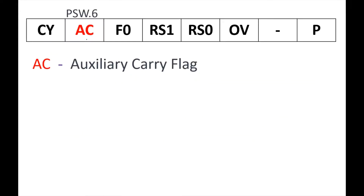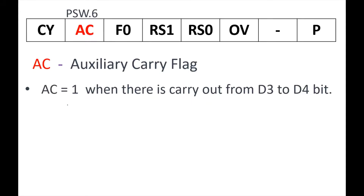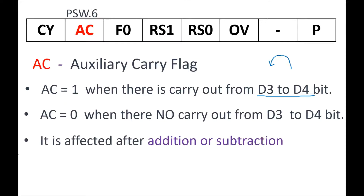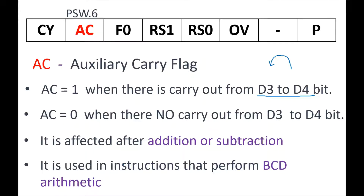The next flag is auxiliary carry flag, which is PSW.6. It becomes 1 when there is a carry out from D3 to D4, and becomes 0 when there is no such carry. This will become clearer with an example. It is affected by addition or subtraction operations, and it is particularly used when performing BCD arithmetic — when two BCD numbers are added or subtracted, this flag gets affected.